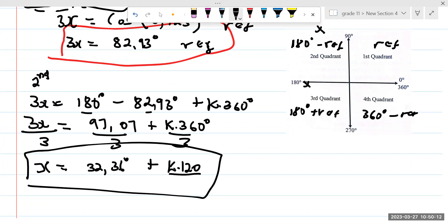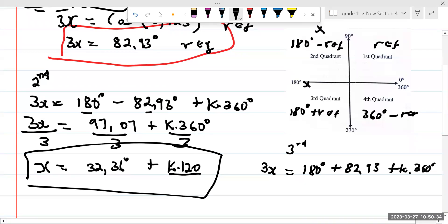We still have another solution. Where do we get the other solution? We get it on the third quadrant. Let's go on the third. If we go on the third, we're going to say 3x is going to be equal to 180 degrees plus 82.93 plus K multiplied by 360. My period is 360 because it's cosine. My period is 360 because it's sine. My period is 180 because it's tan. When I solve this thing, it's going to give me the correct period for this thing.